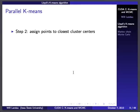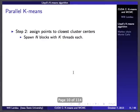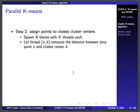Here's how you parallelize it. Starting with step two, assigning points to the closest cluster centers, we're going to do this in parallel. We take N blocks and K threads per block, where N is the number of data points and K is the number of clusters. Thread (n, k) — data point n paired with cluster k — has a corresponding thread that computes the distance between data point n and cluster k.